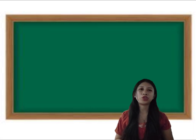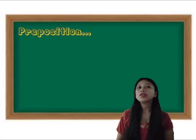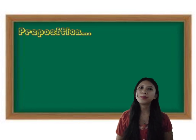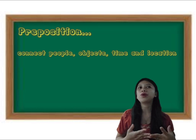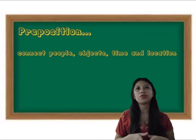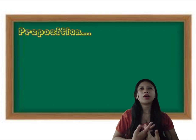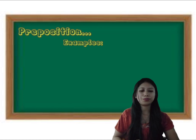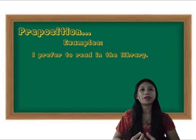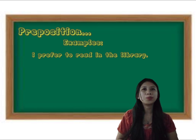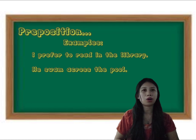So the next lesson that I'm going to share to you is preposition. So what is preposition? A preposition is a word used to link nouns, pronouns, or phrases to other words within a sentence. They act to connect the people, objects, time, and locations of a sentence. I have here two examples of preposition. The first one is: "I prefer to read in the library." So the preposition here is the word in. The second example is: "He swam across the pool." The preposition here is the word across.